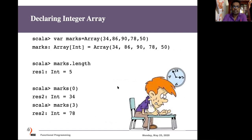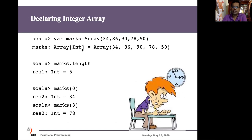In Scala, how do you declare an array? Arrays can be declared as variables or values. We say 'var' followed by the name of the array, then an equal sign, then the keyword 'Array' with brackets containing the elements — all of the same type. Scala will create an array called, say, 'marks', with the initially given elements. Those elements can be changed because the array collection is mutable.